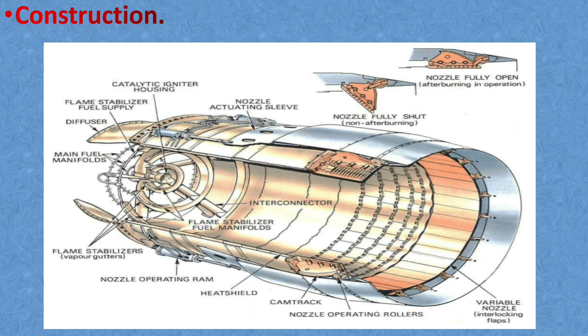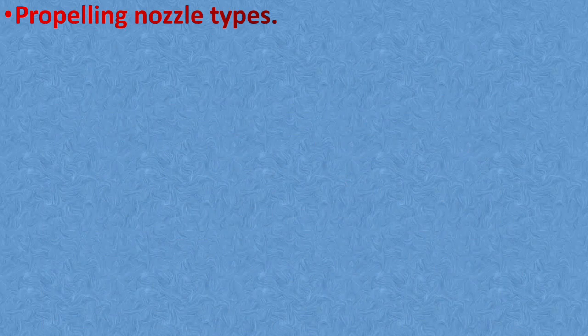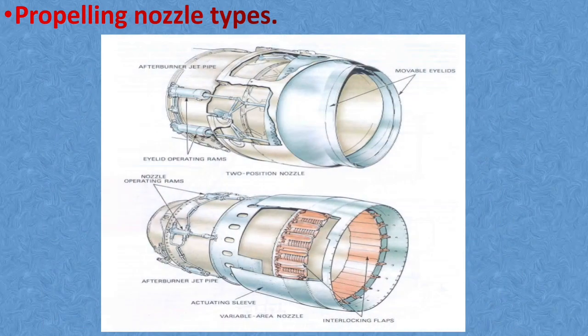After the jet pipe, there is a propelling nozzle made up of similar material as the jet pipe. There are two types of propelling nozzle used with afterburner. As you can see in this picture, the first one is a two-position propelling nozzle. In two-position propelling nozzle, there are two movable eyelids that are operated by actuators or pneumatic rams to give an open or closed position.